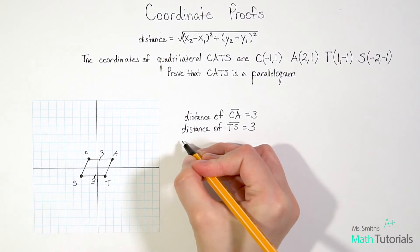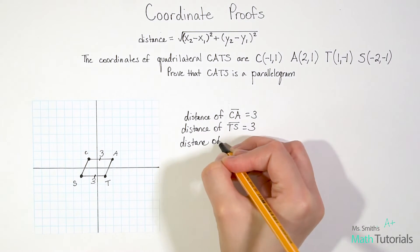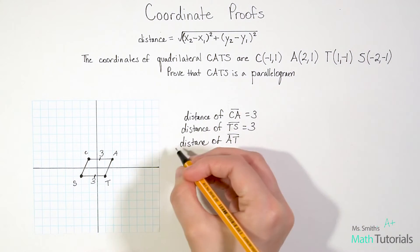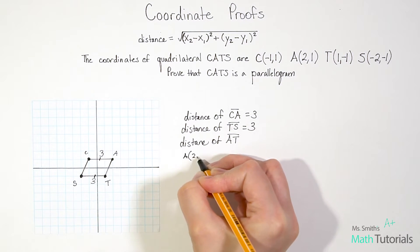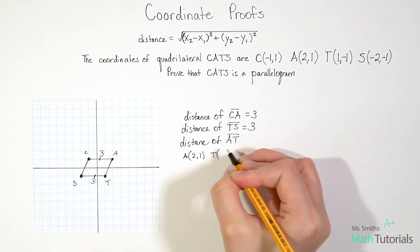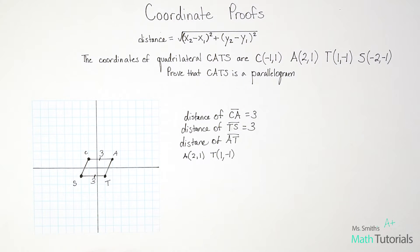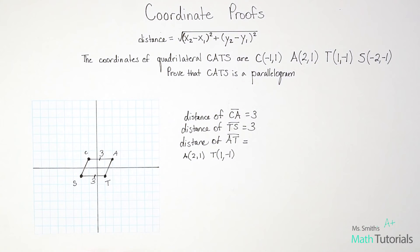We want to find the distance, let's start with AT. The two points were, A was, let me just note them down here. A was 2, 1, right? And T was 1, negative 1. So now, in order for us to use distance formula to actually find the distance, we need to label what is my x1, x2, and what's my y1, y2.